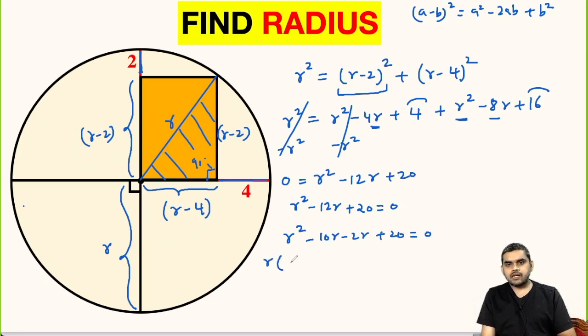Taking out r common, this will be r minus 10 taken out common, so it will be r minus 10 inside. Again, we can take r minus 10 outside and multiply with r minus 2 equal to 0. From here we get r equal to 10 and from here r is equal to 2.